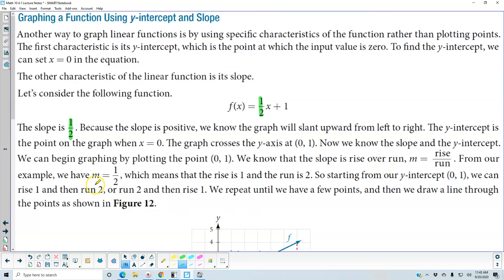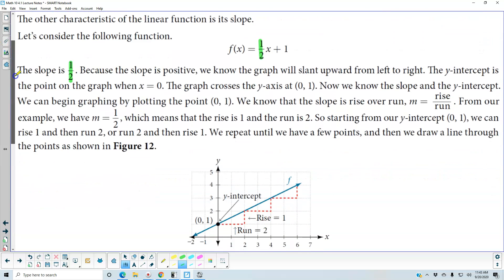From our example, we have m is equal to one over two, which means that the rise is one and the run is two.